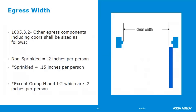The egress width is measured from the face of the door to the face of the stop when the door is open 90 degrees. You don't need to account for hardware unless it projects more than four inches off the face of the door. To determine the egress width needed for other egress components including doors: for a non-sprinkler building it's 0.2 inches per person; if it is a sprinklered building, it's 0.15 inches per person. That's why there's a sprinkler radio button on the egress calculator — it affects the overall width required for your doors.